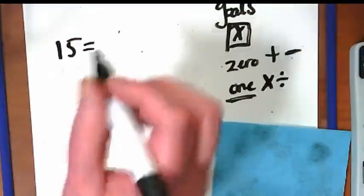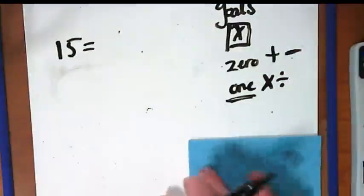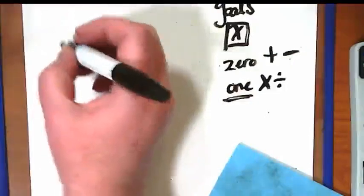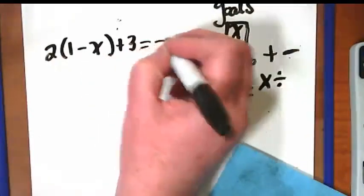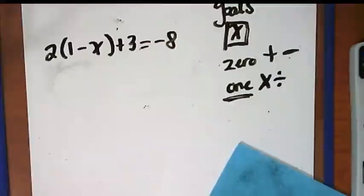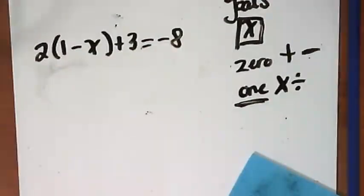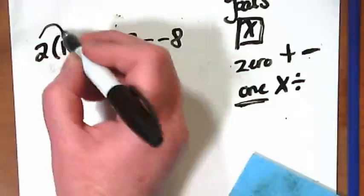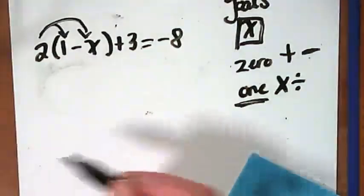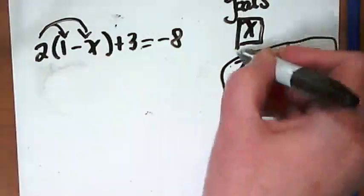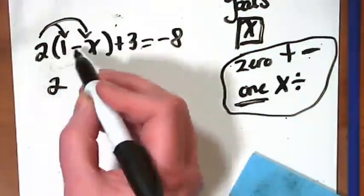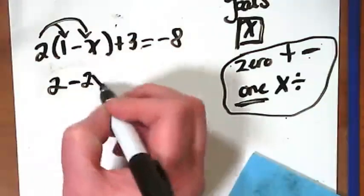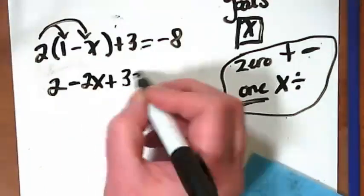I can't hear you. Was it 10? Oh, and I wrote down 11. Thank you. I wrote down 10, but I'm copying 11. All right. Here is the other problem I'm starting to see questions about. This is a problem that has distribution in it. We have to take this two and multiply it by here and here first before we can think about this zero, one thing. Two times one is two. Two times negative X is going to be negative two X plus three equals negative eight.